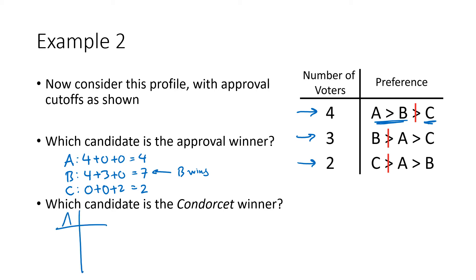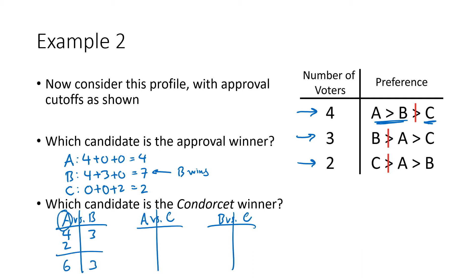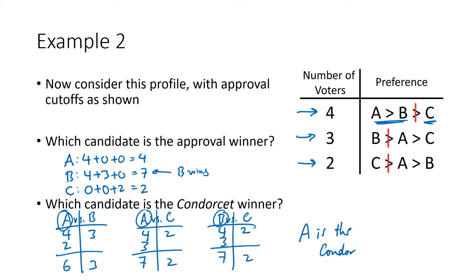Because we have the full voter profile, we can also find the Condorcet winner. In the A vs. B matchup, A wins six to three. In A vs. C, A wins seven to two. In B vs. C, B wins. So A beat both opponents — A is the Condorcet winner. This shows that approval voting does not satisfy the Condorcet winner criterion: there was a Condorcet winner, but approval voting did not select that candidate.